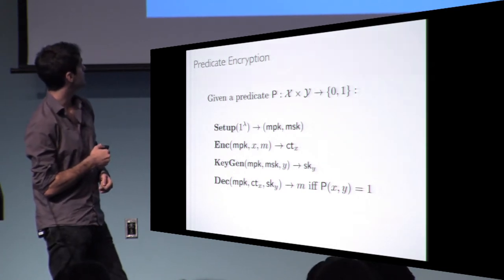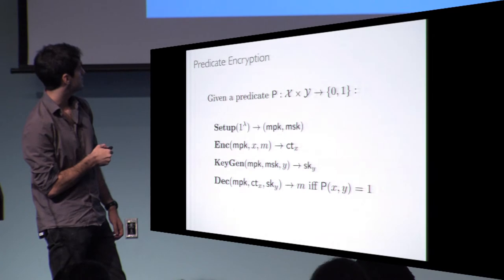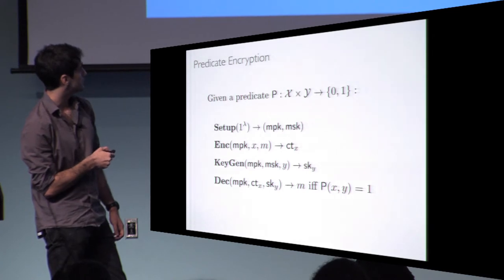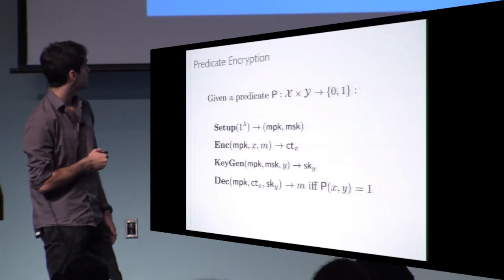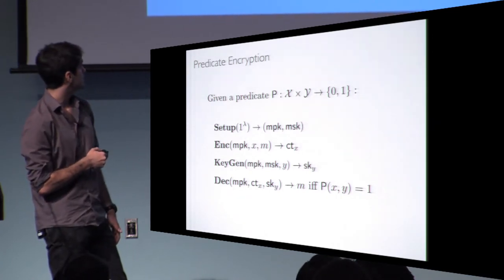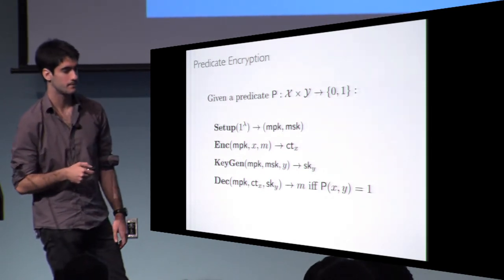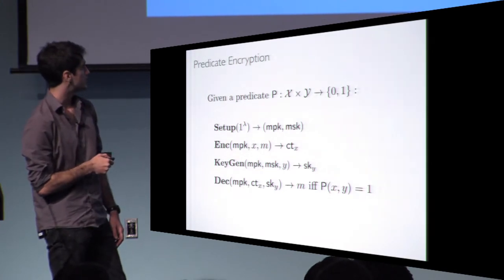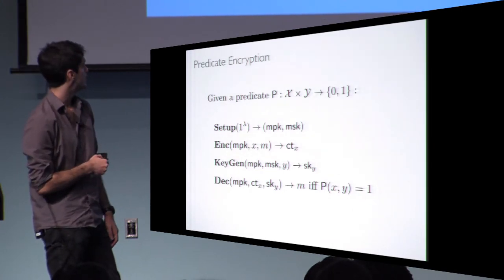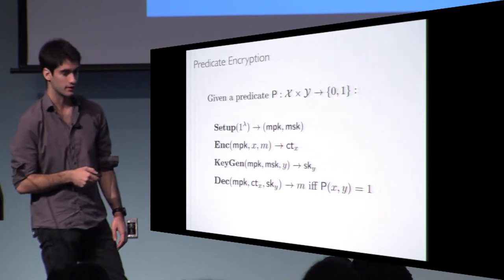More formally, predicate encryption consists of four algorithms. Setup is run by the master authority. Encryption takes a message and a value X and produces a ciphertext for X. Key generation is run only by the master authority and requires the master secret key, producing secret keys for values Y. Decryption only works when the predicate is true.